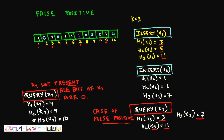For x4, which is truly not present, h1(x4) = 4, h2(x4) = 9, and h3(x4) = 10. These bits are 0, so we correctly say x4 is not present. This is the idea behind insertion and query in a Bloom filter — false positives can occur, but true negatives are always correct.